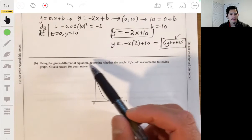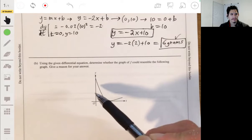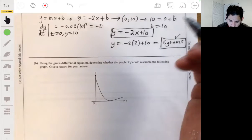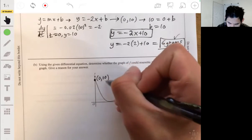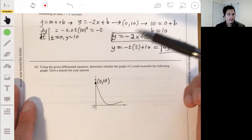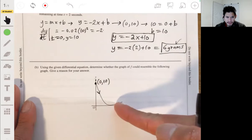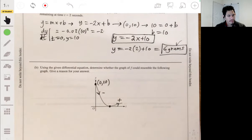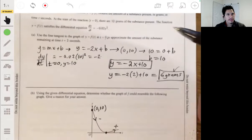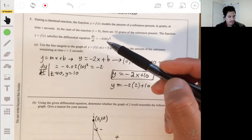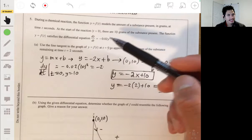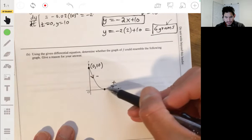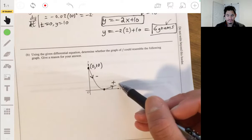Part B. Using the differential equation that's given, determine whether the graph of f could resemble the following graph. The initial condition is that it's 10 when t is 0, so it would make sense over there. But see what's happening with the function is that the slope is negative, but then after here it increases, the slope becomes positive. So this actually wouldn't work, because when you plug in any value that's greater than 0, you're always going to get a negative value of the slope.